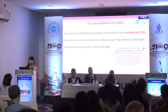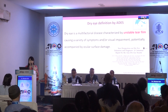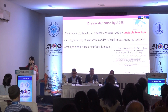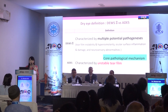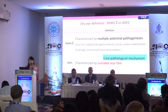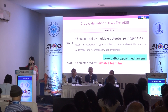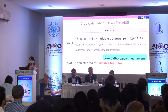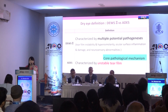ADES defines dry eye as follows: dry eye is a multifactorial disease characterized by unstable tear film, causing a variety of symptoms or visual impairment, potentially accompanied by ocular surface damage. In a simple comparison between DEWS2 and ADES, according to DEWS2, dry eye is characterized by multiple potential pathogeneses, but for ADES it is very simple — it is characterized by unstable tear film as the pathological mechanism.